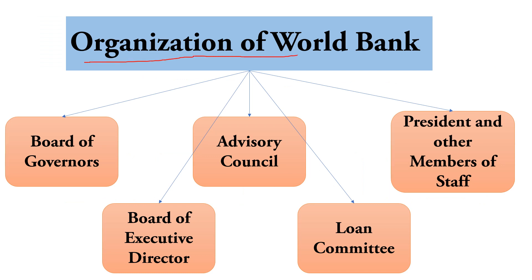Regarding the organization of the World Bank, the first body is the Board of Governors, which is the supreme policy-making body of the bank. The Board consists of one Governor and one alternate Governor appointed for five years by each member country. Each governor has voting rights related to the financial contribution of the government they represent. The Board of Governors meets annually to review the general policy of the bank.